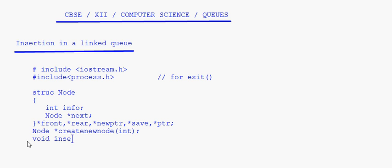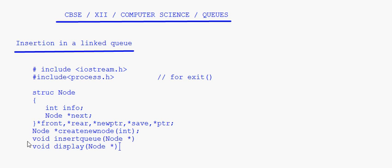The next prototype is void insertQueue, where we pass the address of a node. Then we write the display function prototype, which also takes the address of the front pointer, so the parameter type is node pointer.